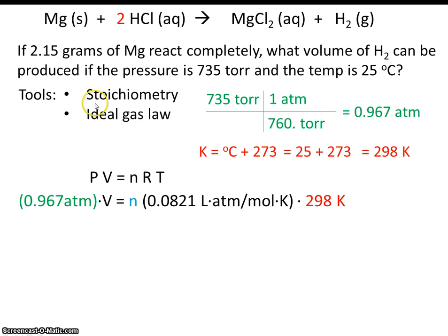Well, that's where the stoichiometry step comes in. So this is stoichiometry just like usual. Start off by writing your given: 2.15 grams of magnesium.